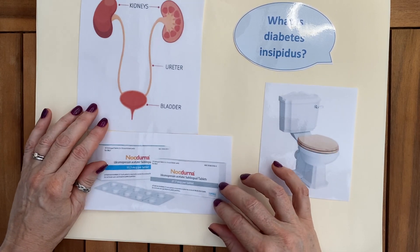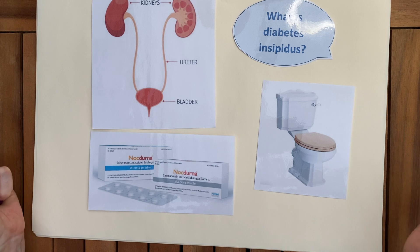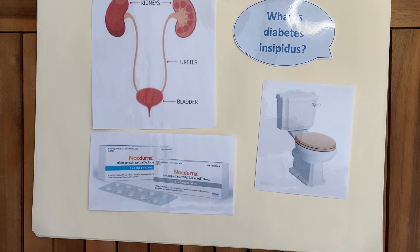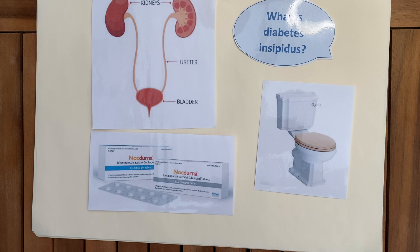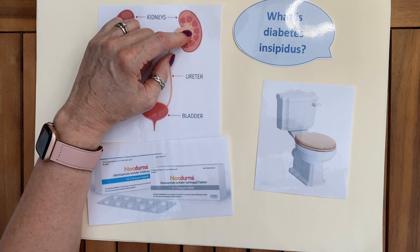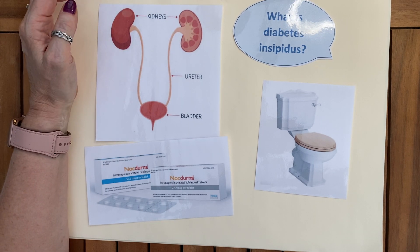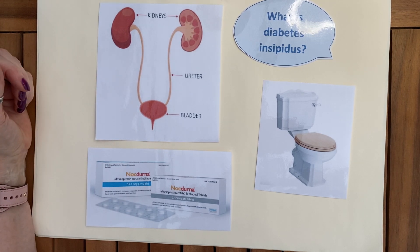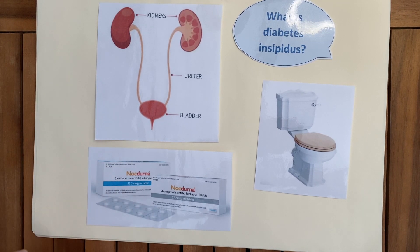Treatment for diabetes insipidus involves taking synthetic anti-diuretic hormones as tablets. On the other end, sometimes an older person has a build-up of fluid in their feet and ankles — called edema — or in the wrists and hands due to gravity and reduced mobility. This is a combination of the deterioration of the nephrons, which are the filtration units in the kidneys. They don't sort out the fluid balance properly, so too much fluid accumulates in the feet and ankles, and again the treatment involves the anti-diuretic hormone.